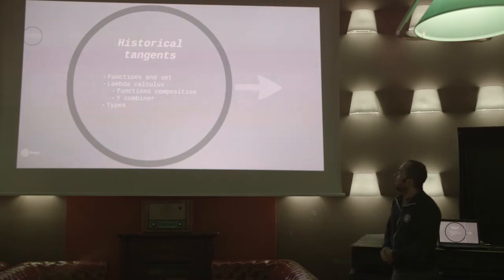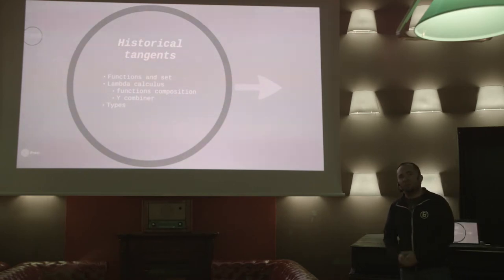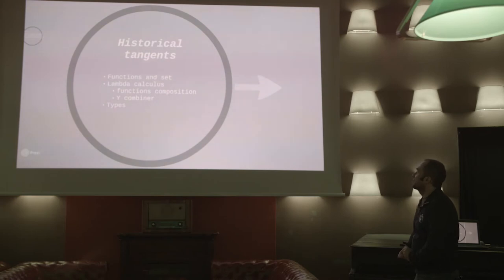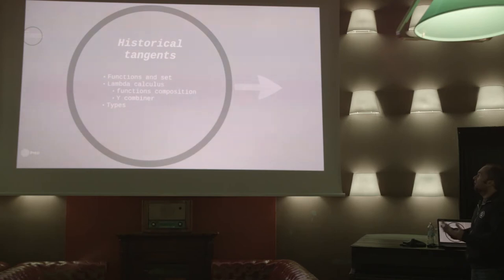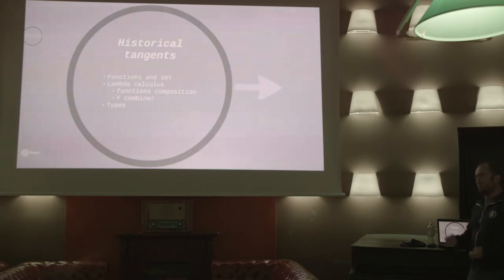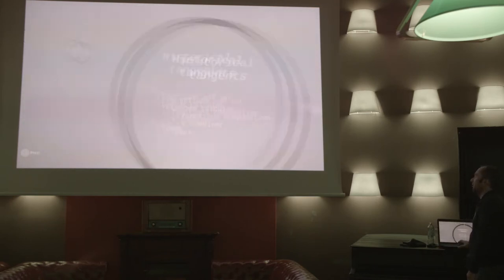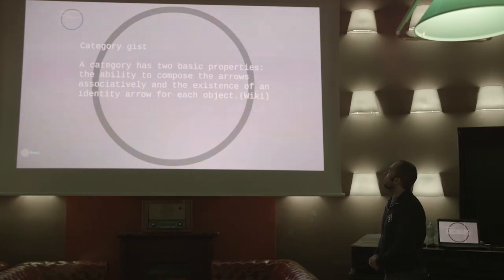Here is also an example of one of the lambda calculus combiners. This is the Y combiner, which is a famous one — it's something which does not change the function; when I apply the function to that combiner, we get it back. This means that we can write recursive functions, and also types. Types are really crucial because without types we would end up with only one category.